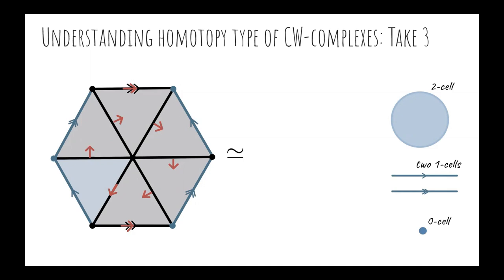But, which complex is that? Is it a wedge of circles and sphere? Is it a torus? We should reconstruct the attaching map of the critical cells in order to completely determine its homotopy type.